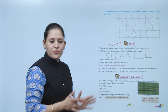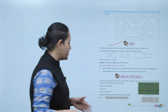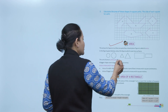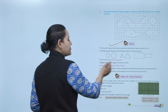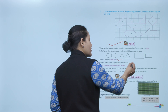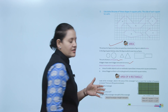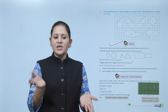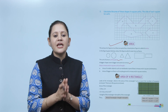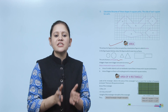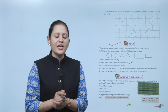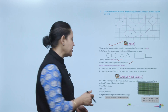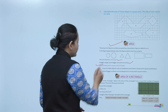The bigger the shape, the more surface it will cover. The unit of area is unit square. A bigger shape has a bigger area and vice versa. Area is measured in square units of length. Area is always measured in square units.